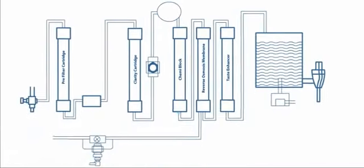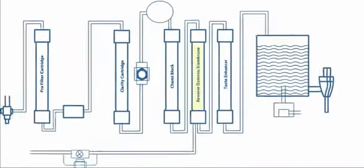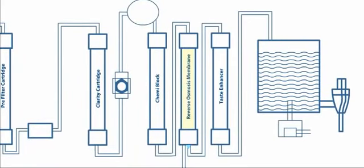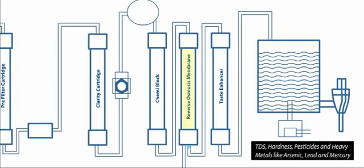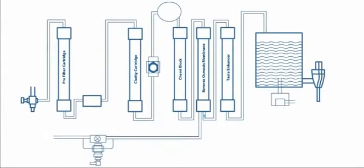Water then goes to the reverse osmosis membrane cartridge. This cartridge reduces total dissolved solids, hardness, pesticides, and heavy metals like arsenic, lead, and mercury. It also removes microorganisms like bacteria, viruses, protozoa, and cysts.